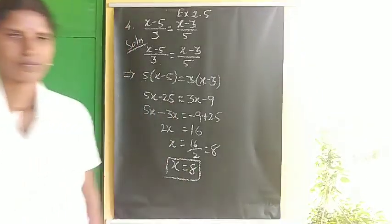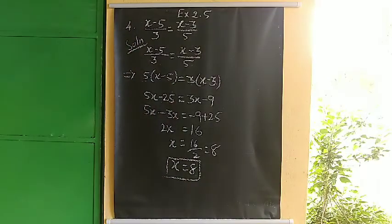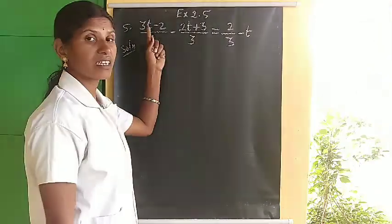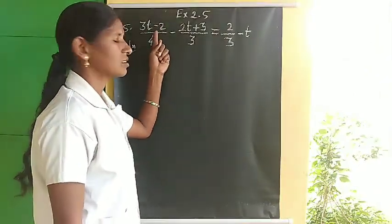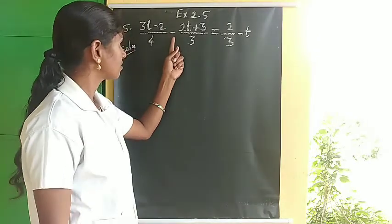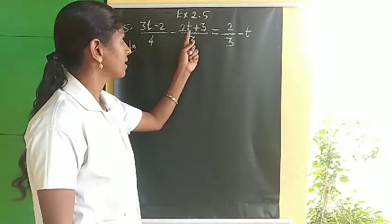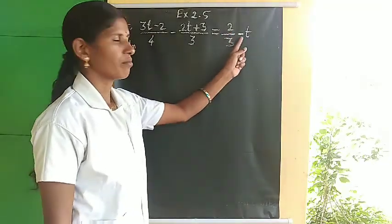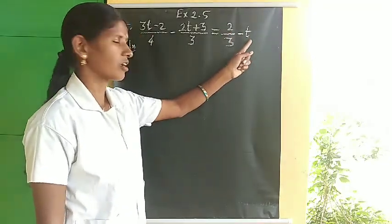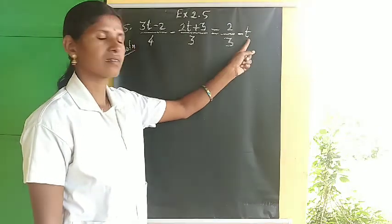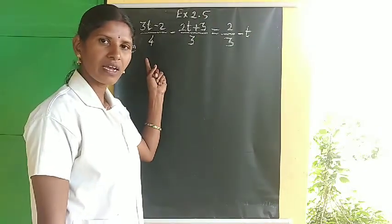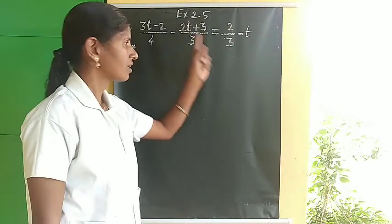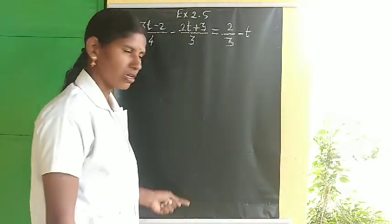Next sum — the fifth problem: 3t minus 2 divided by 4, minus 2t plus 3 divided by 3, is equal to 2 by 3 minus t. In the first step, we bring this minus t to LHS, then the constant term stays on LHS and we simplify to find t.